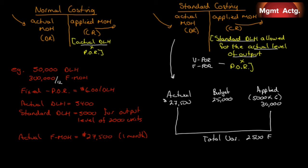Our budget said we should have incurred $25,000 in fixed costs for the month. Why does this matter? The amount of labor hours worked does not affect depreciation on the factory or the property tax we pay — fixed costs are independent of direct labor hours, so we should not expect them to differ from the budget. However, we budgeted $25,000 and spent $27,500. That is a budget variance of $2,500 unfavorable. But our total variance was $2,500 favorable, so the remaining piece must be $5,000 favorable — we call this the volume variance.